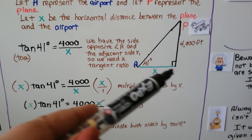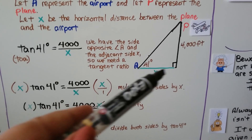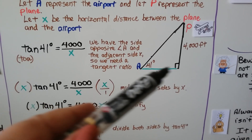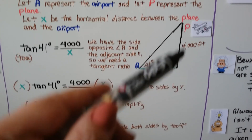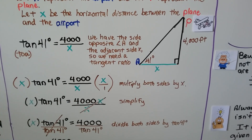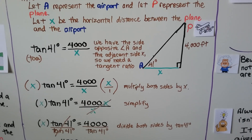So the horizontal distance from the air traffic control tower to the plane is approximately 4,601 feet.